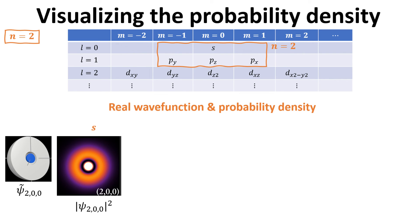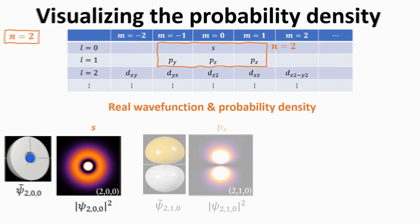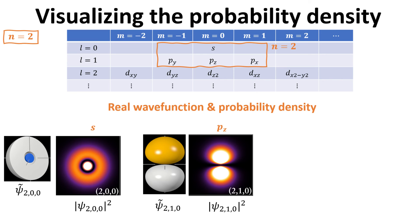We can also plot the real wave function, denoted by ψ tilde. Here, the sign of the real wave function is denoted by the two colors. Next, we look at the pz orbital. It has a shape like its real spherical harmonics we discussed in last video. It has two lobes with the lobe axis pointing along the z direction.